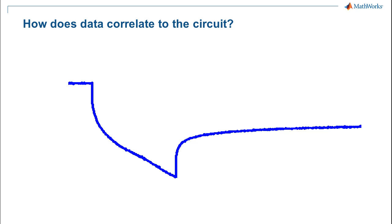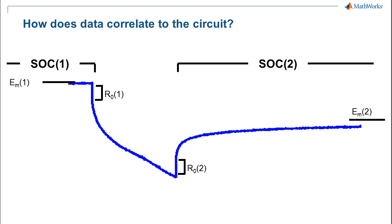How does this experimental data correlate to the equivalent circuit? Here's one discharge pulse. The rest periods before and after the pulse correspond to times when the SOC was constant, but obviously different values before and after. The open circuit voltage, or EM here, is also constant during rest. It affects the voltage seen during rest when fully settled. The R0 values affect the instantaneous drop and rise at the beginning and end of a pulse. The remaining RC branches affect the dynamics of the model at the transients.